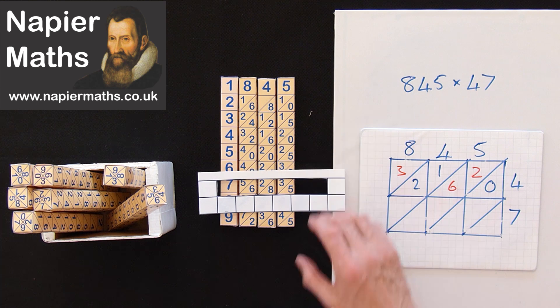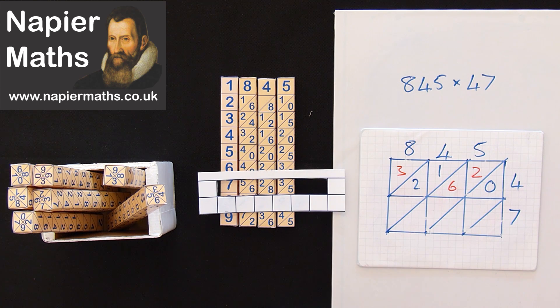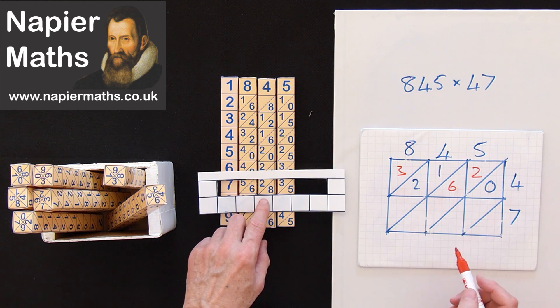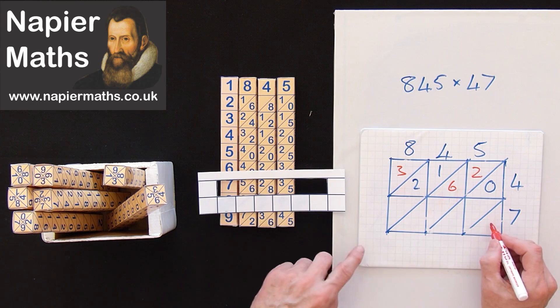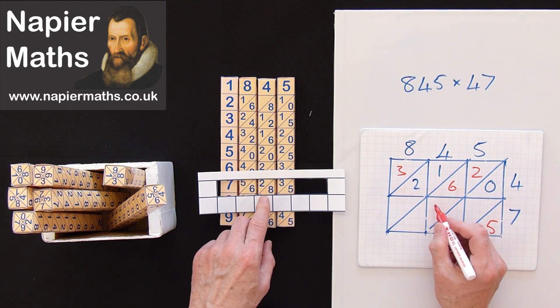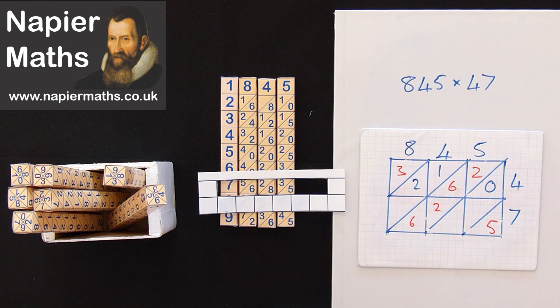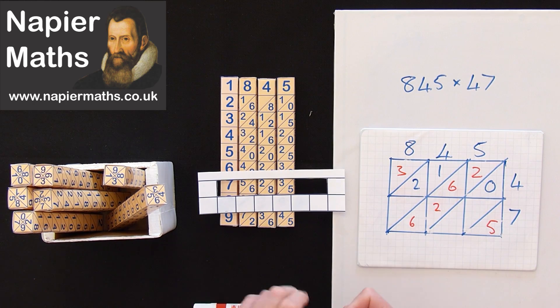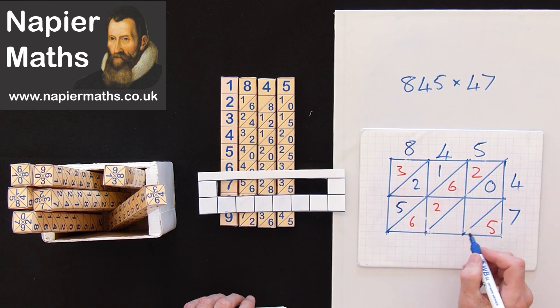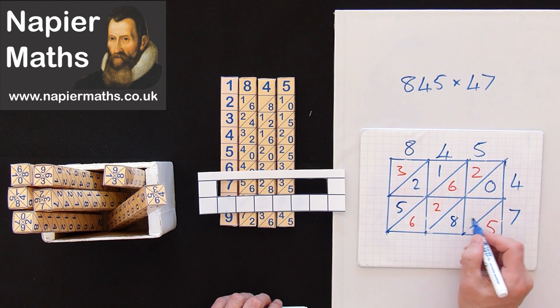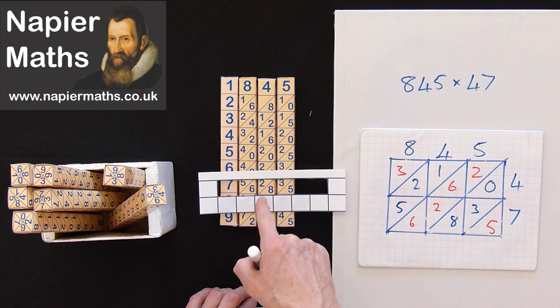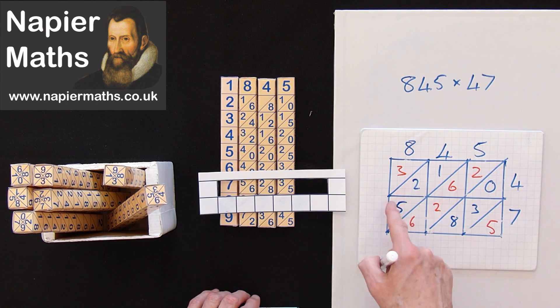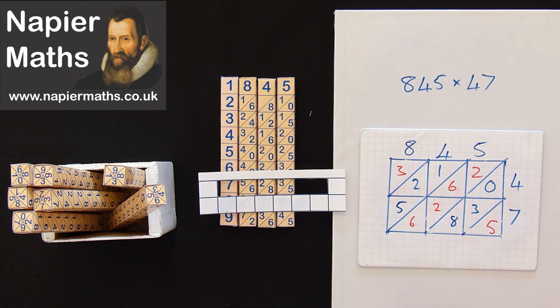So go down to the 7 and we do the same again. So you can see that would be 5, 2, 6. And that one's 5. That's 8 and 3. So it's just 5, 6, 2, 8, 3, 5. And that's all you do.